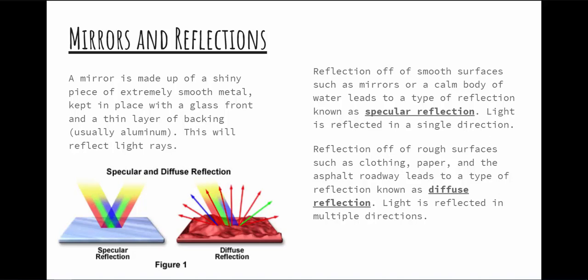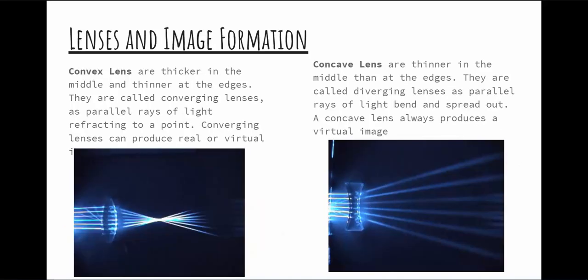Whether you get a specular or diffuse reflection depends on how the surface looks compared to light. Fun fact about paper: they take a tree, grind it up into pulp, lay it out and it sticks together. When you realize it's literally just a bunch of fibers pressed together, that's not smooth at all for light. So light bounces off randomly, which is why you can read paper from any angle. If paper acted like a mirror, you could only read it from a certain angle.